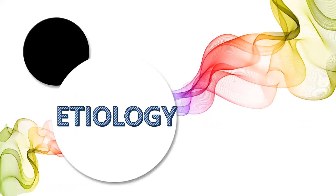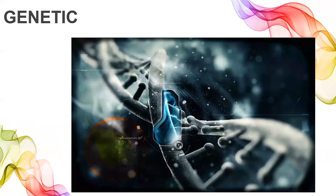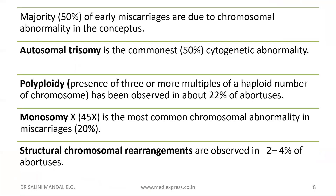Now let's talk about the etiological factors of abortion. The first one is the genetic factor. Nearly 50% of early miscarriages are due to a chromosomal abnormality in the conceptus — there is some problem in the chromosomes of the conceptus, and that is why there is a miscarriage.